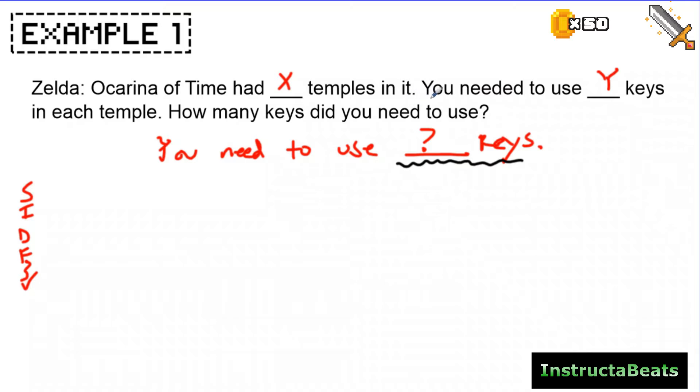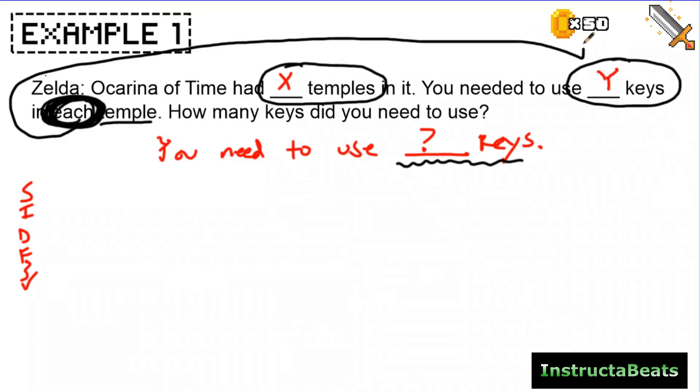So my statement's talking about keys, which means I need to identify any information about keys in my word problem or things that are going to help me figure this out. So Zelda Ocarina of Time had X temples in it. You need to use Y, here's something about keys. Here's this keyword, each. Now I have a weapon to use in this word problem game. And so I know also that temples are important now, so I need to circle this. Just to remind you, we're not actually going to be solving this. We're going to be figuring out what to do and we're going to write an equation that would help us solve it if we knew the numbers.